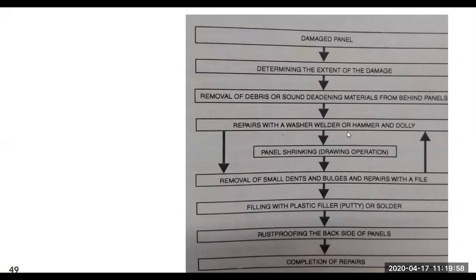Panel shrinking is a drawing operation, and these two steps — repair with washer/welder/hammer/dolly, and removal of small dents and bulges — are done in a cyclic way. You repair with the tools, then remove small dents and bulges. If they are not totally removed, you go back to the repair process and continue this entire cycle until you get the best output from the part you are trying to repair.